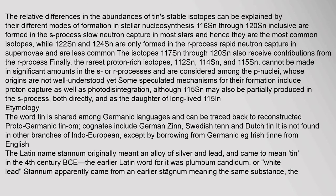The relative differences in the abundances of tin's stable isotopes can be explained by their different modes of formation in stellar nucleosynthesis. 116Sn through 120Sn inclusive are formed in the S-process (slow neutron capture) in most stars and hence are the most common isotopes, while 122Sn and 124Sn are only formed in the R-process (rapid neutron capture) in supernovae and are less common. The rarest proton-rich isotopes, 112Sn, 114Sn, and 115Sn, cannot be made in significant amounts in the S or R processes and are considered P nuclei, whose origins are not well understood. Speculated mechanisms include proton capture and photodisintegration.